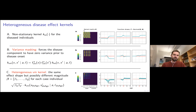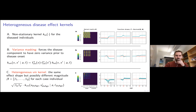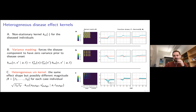In biomedical applications, effects may also be heterogeneous for complex diseases — meaning not all case individuals who get the disease have exactly the same effect, or the effect may have the same shape but different magnitude. We model this using a heterogeneous kernel where we introduce an additional magnitude parameter beta_i for each case individual, then obtain the final heterogeneous kernel by multiplying the variance masking non-stationary kernel with the heterogeneous magnitudes. Each individual then has a slightly different magnitude for the effect.